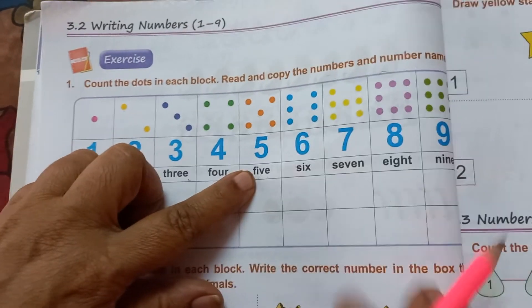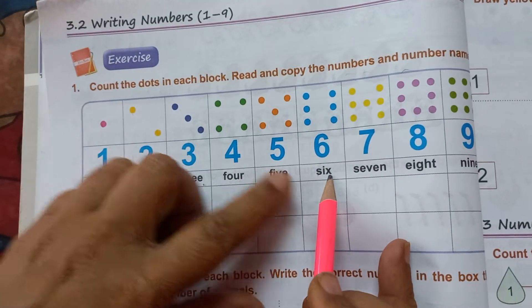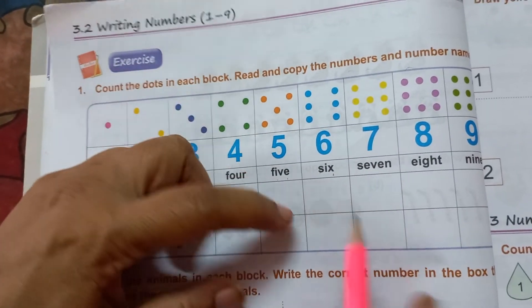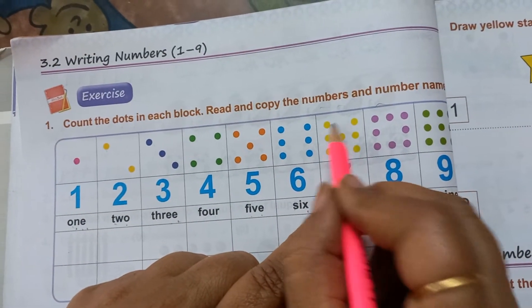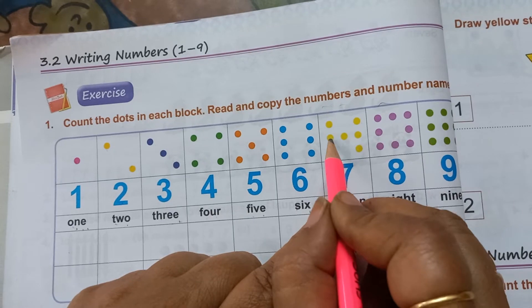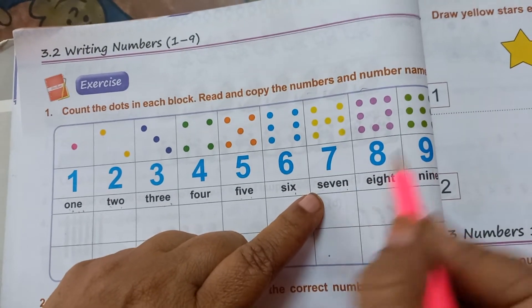One, 2, 3, 4 and 5. So F, I, V, E, five. One, 2, 3, 4, 5, 6. So S, I, X, six. You have to write it like this in these blocks. One, 2, 3, 4, 5, 6, 7. So S, E, V, E, N, seven.